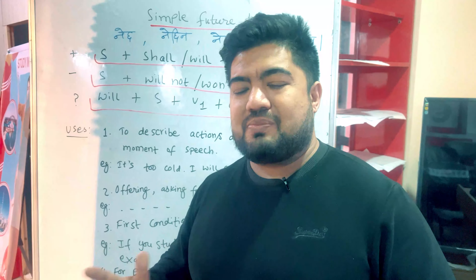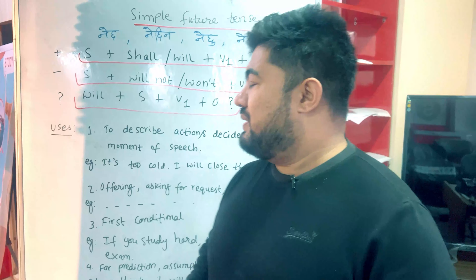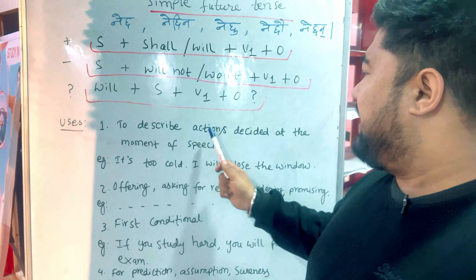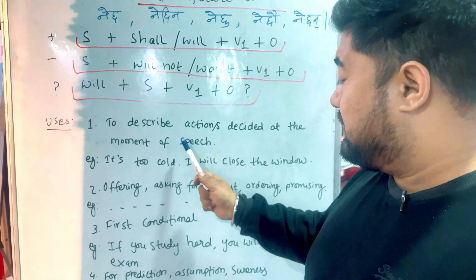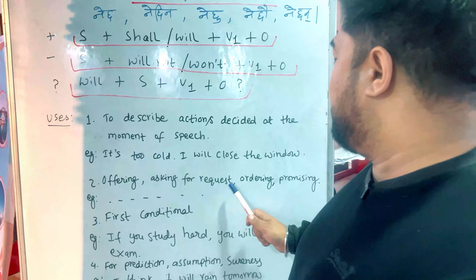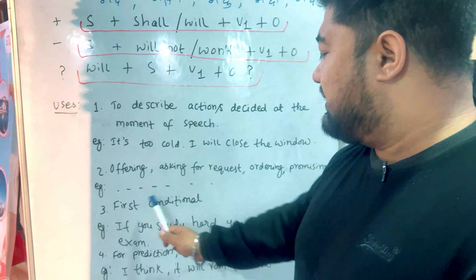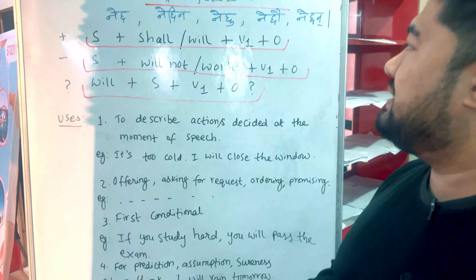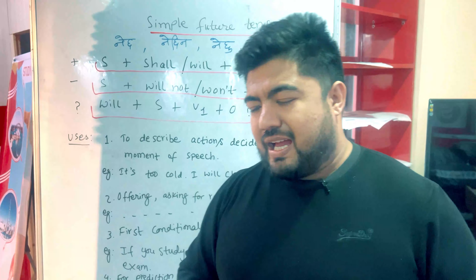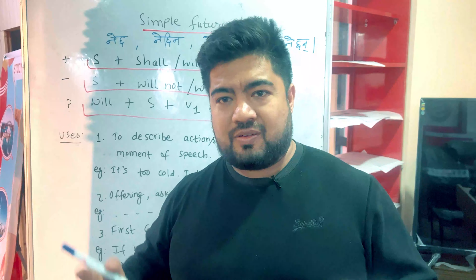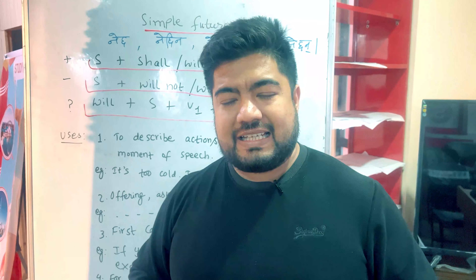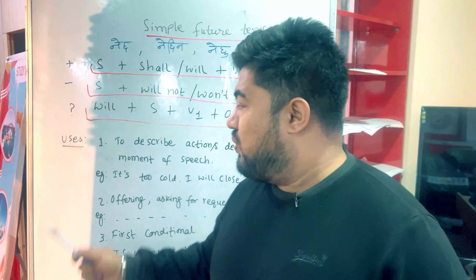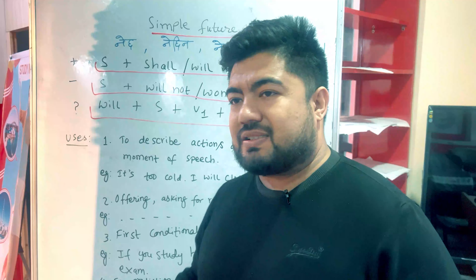That's more than enough. So to recap, the uses of simple future are: to describe actions decided at the moment of speech, offering, asking for requests, ordering, promising, first conditional sentences, and for prediction, assumption, and sureness. I hope this session is very useful for you. Please comment one example for each of the uses.